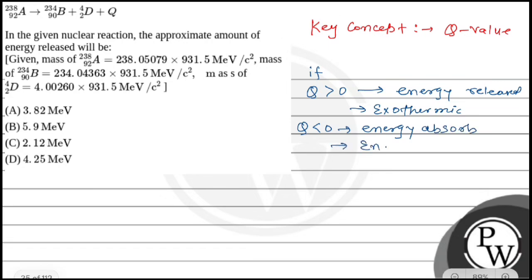And Q-value equals mass of A plus mass of B minus mass of C minus mass of D into C square.